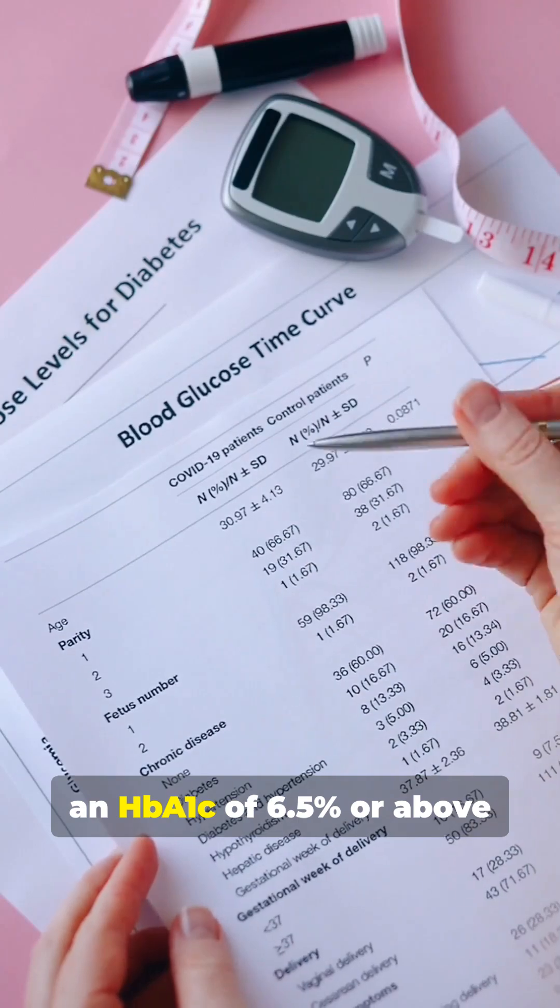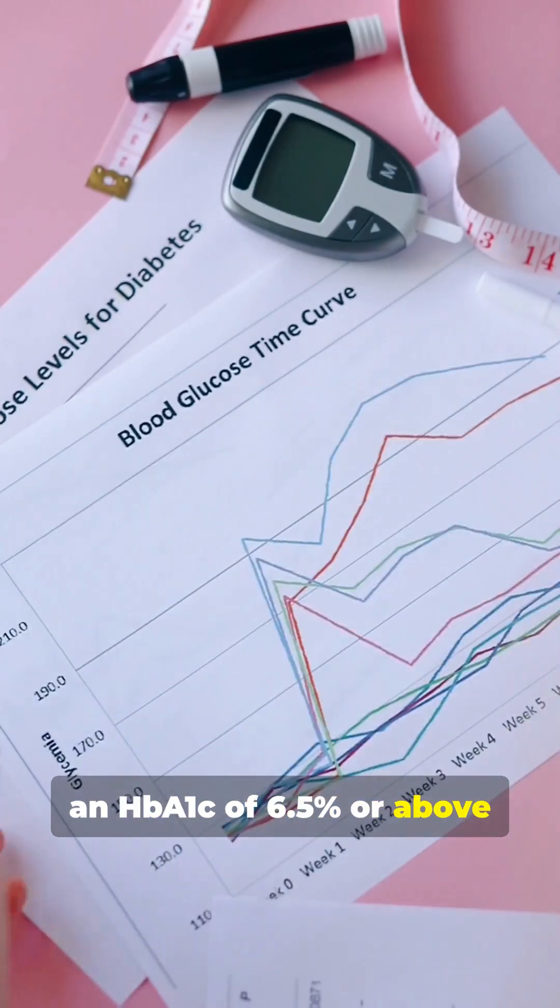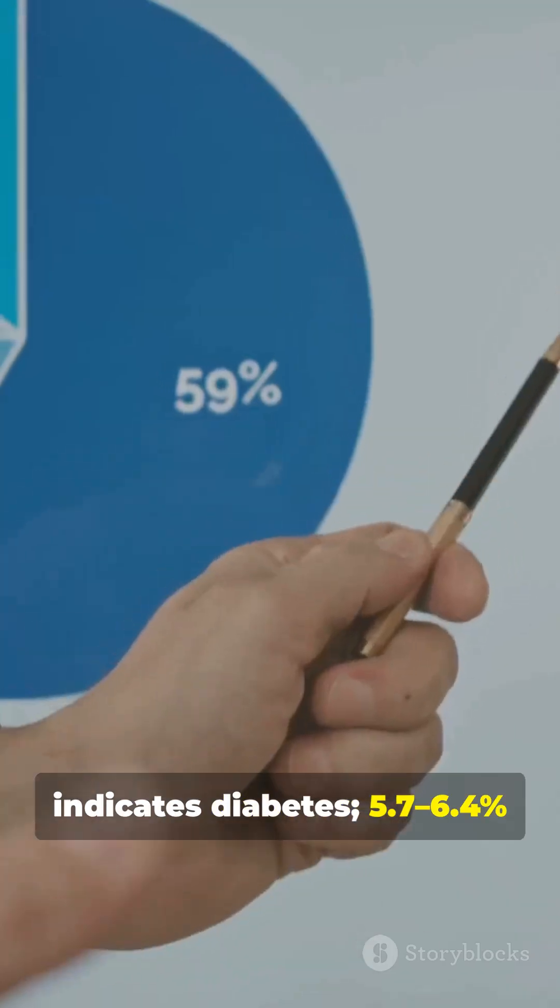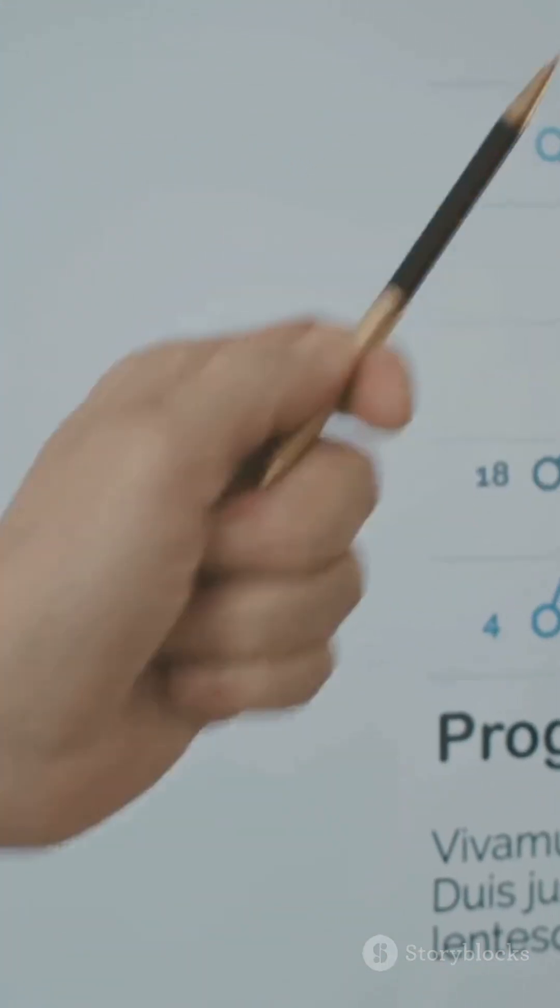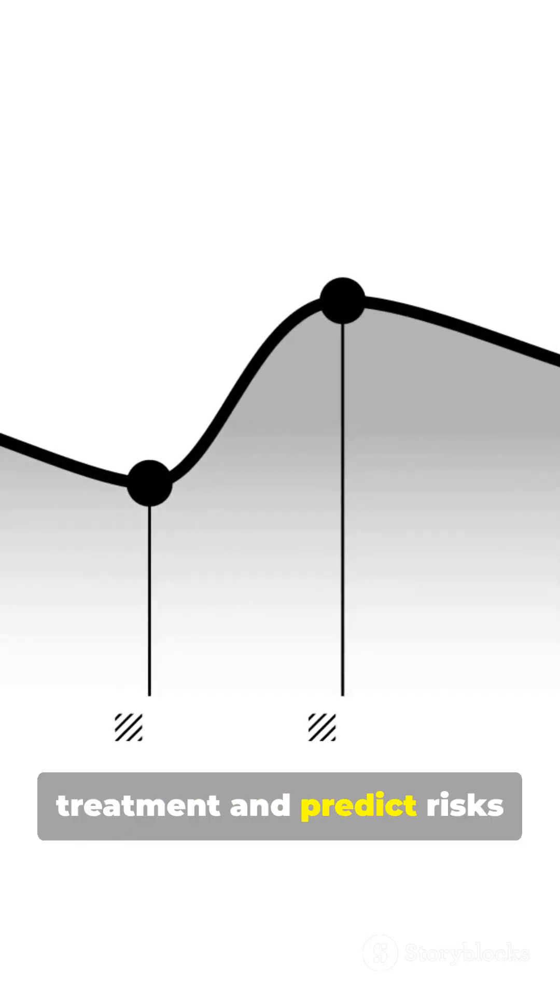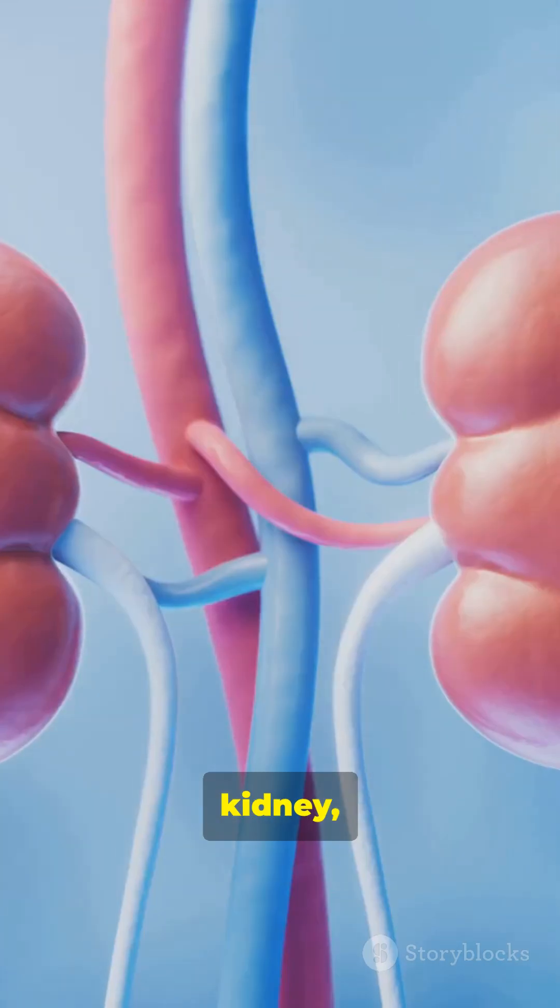Clinically, an HbA1c of 6.5% or above indicates diabetes. 5.7 to 6.4% suggests pre-diabetes. Doctors use it to track treatment and predict risks like heart, kidney, nerve problems.